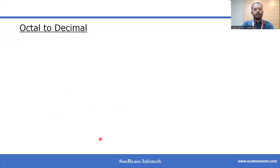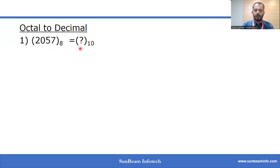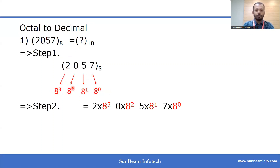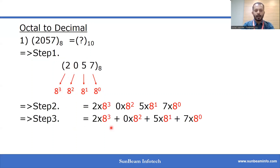For conversion of octal to decimal, take for example 2057 as the octal value. We follow the same three steps. In step 1, we find the positional values of 2057. In step 2, we multiply each positional value by the corresponding digit. In step 3, after adding the products, we get the final output 1071, which is the equivalent in decimal number system.